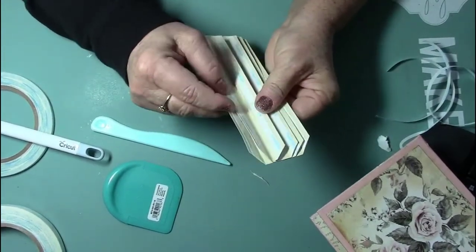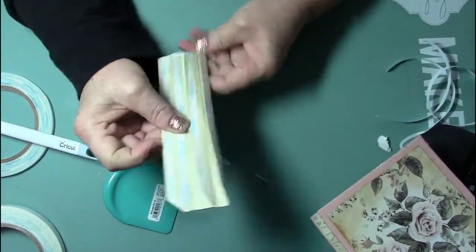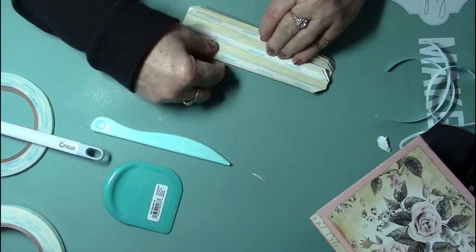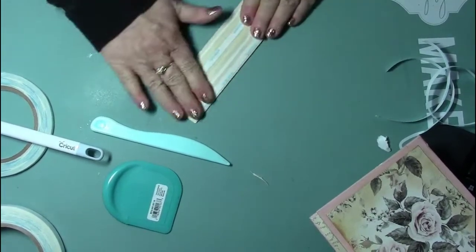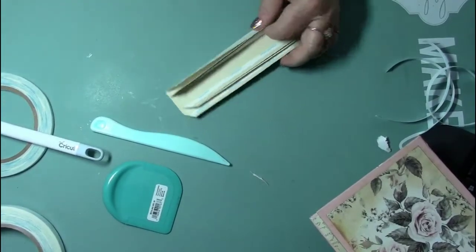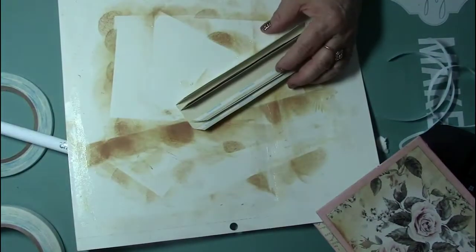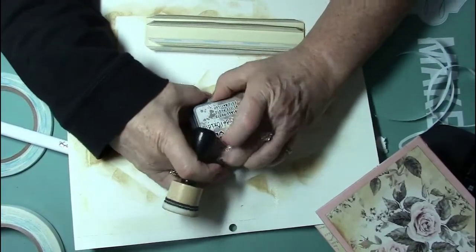So then what I have is room for one, two, three, four, five, six pages. And what I think I'm gonna do is I'm gonna just distress it so that it looks good.